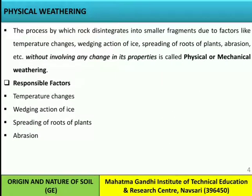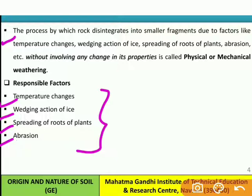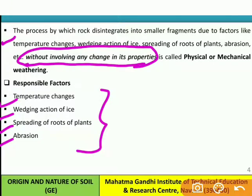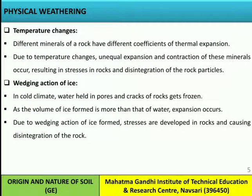Physical weathering is the process by which rock disintegrates into smaller fragments due to factors like temperature changes, wedging action of ice, spreading of roots of plants, and abrasion, without involving any change in the chemical properties of the rock. The key point of physical weathering is that the rock breaks down into smaller particles but its properties do not change during the disintegration.